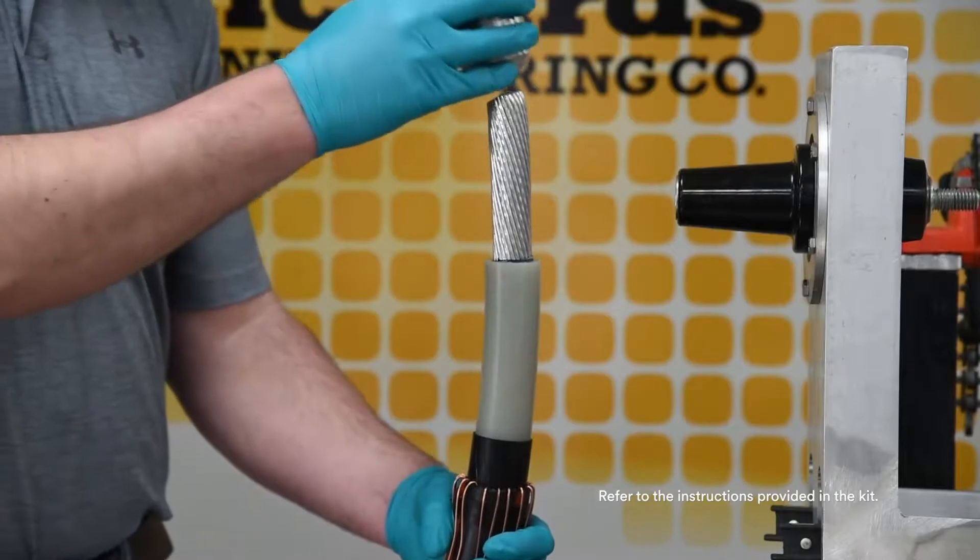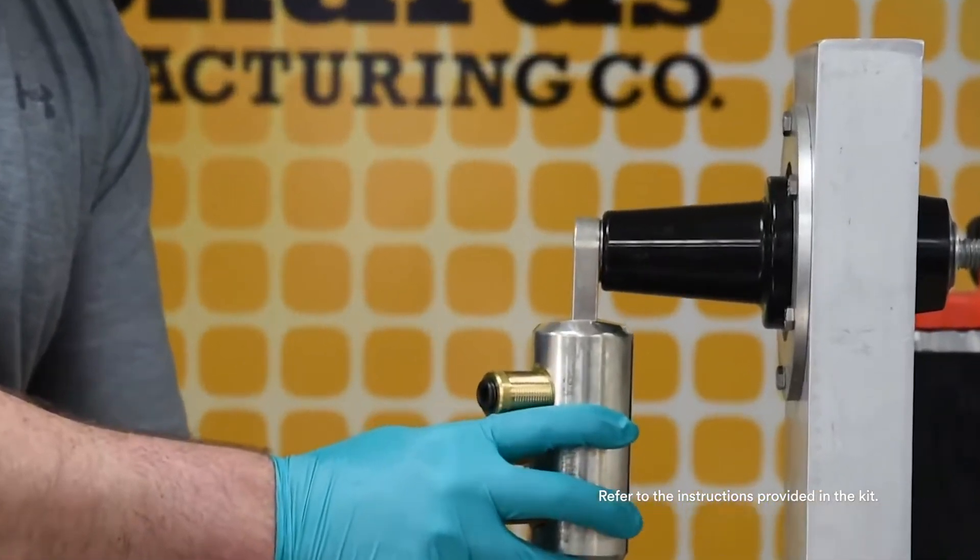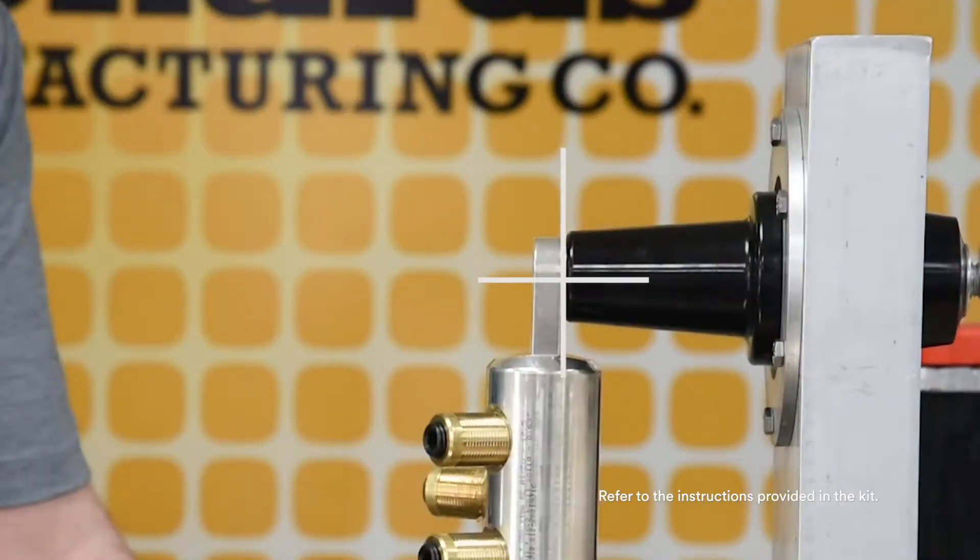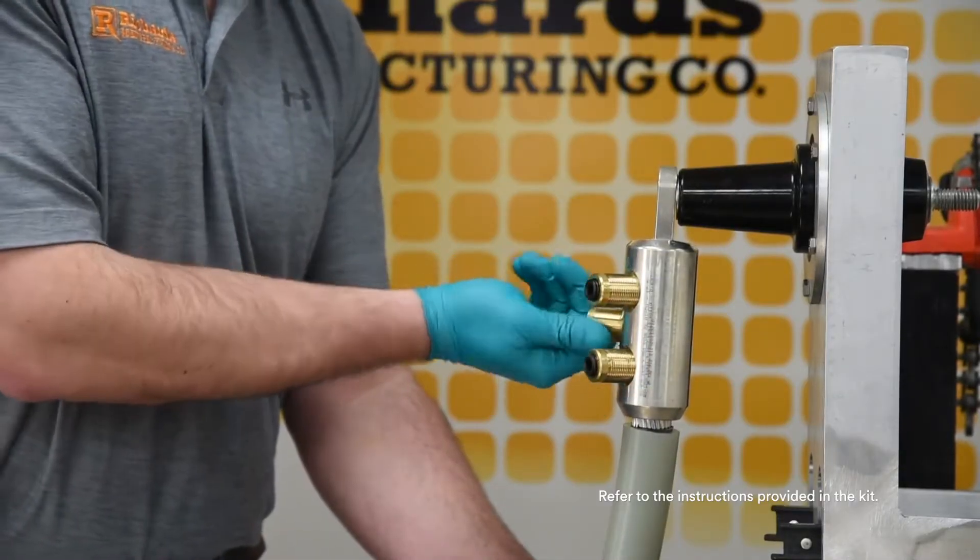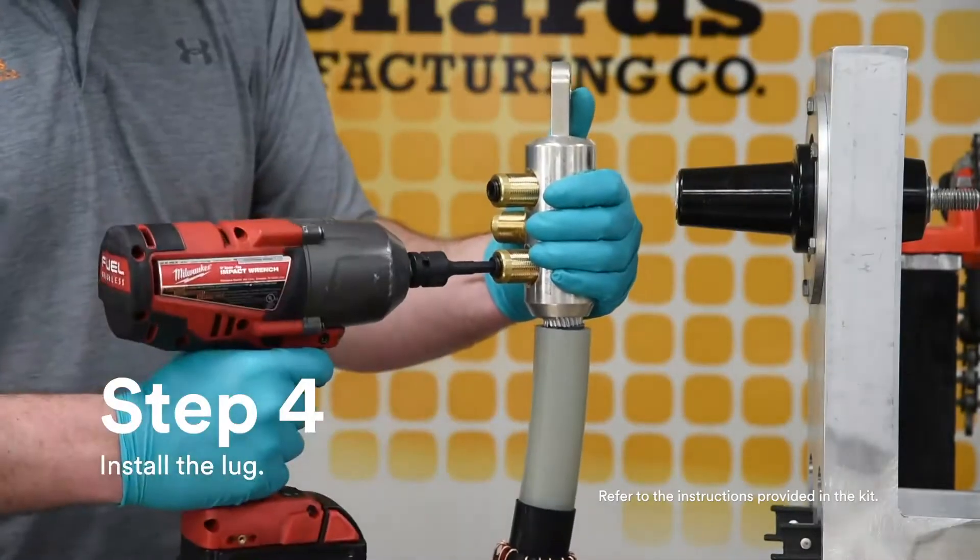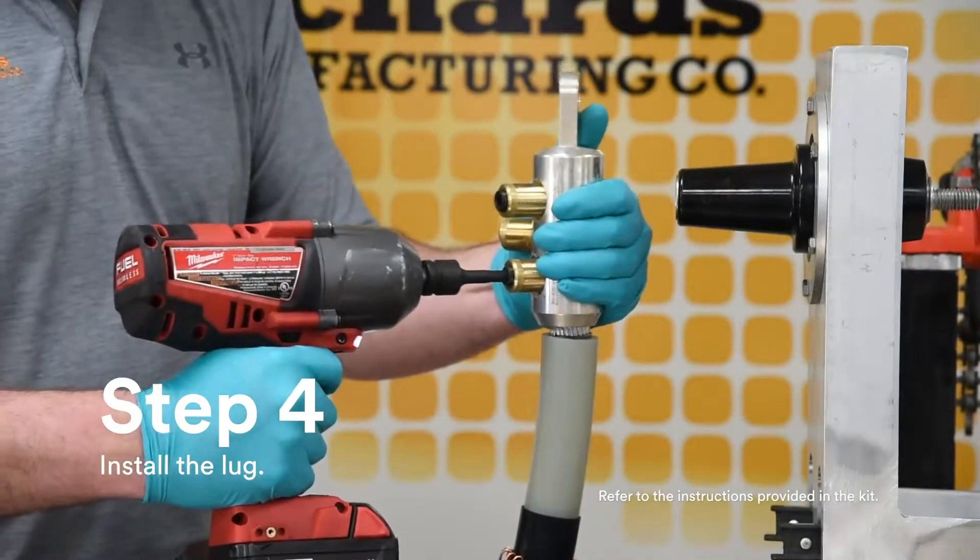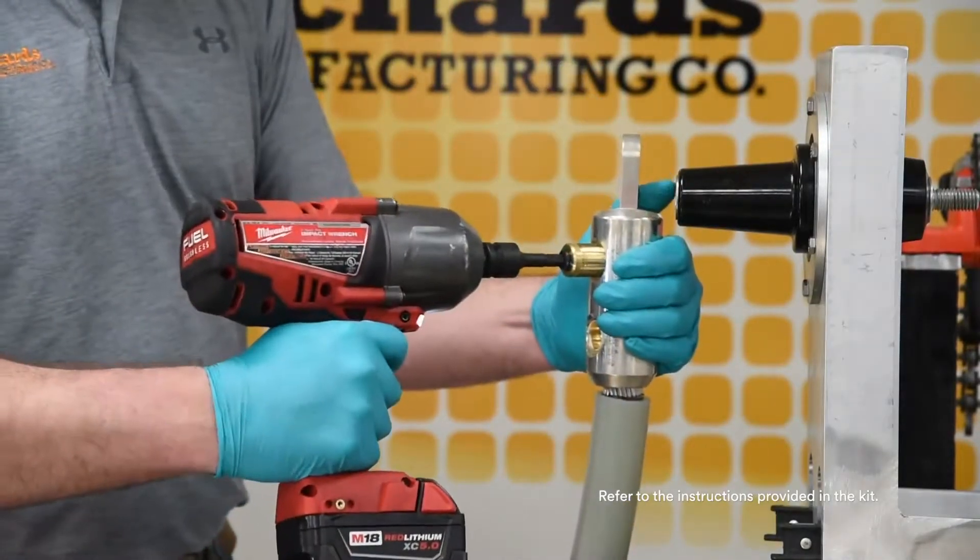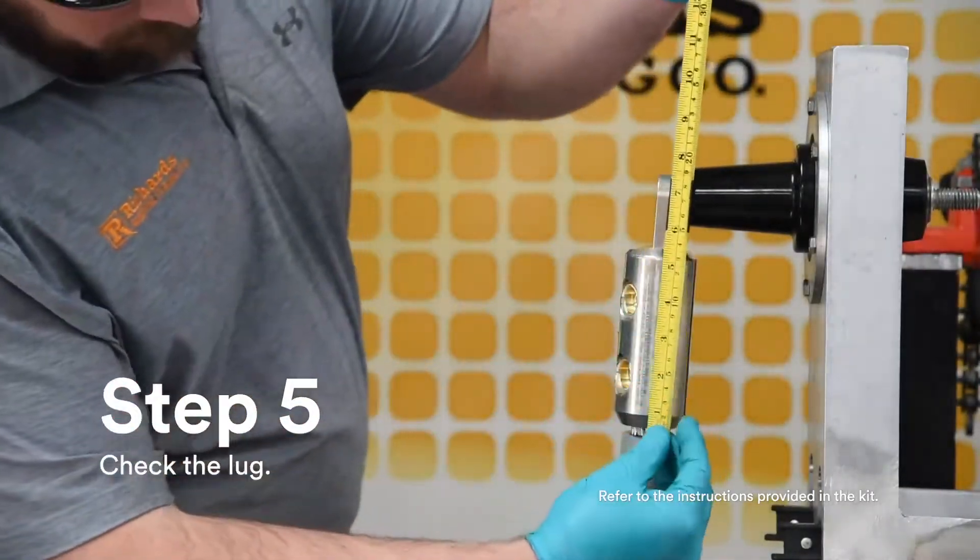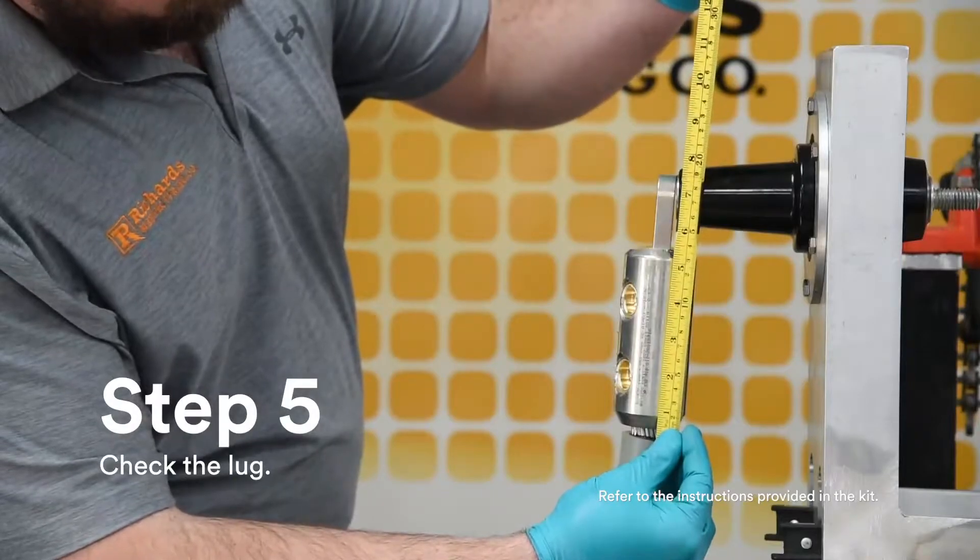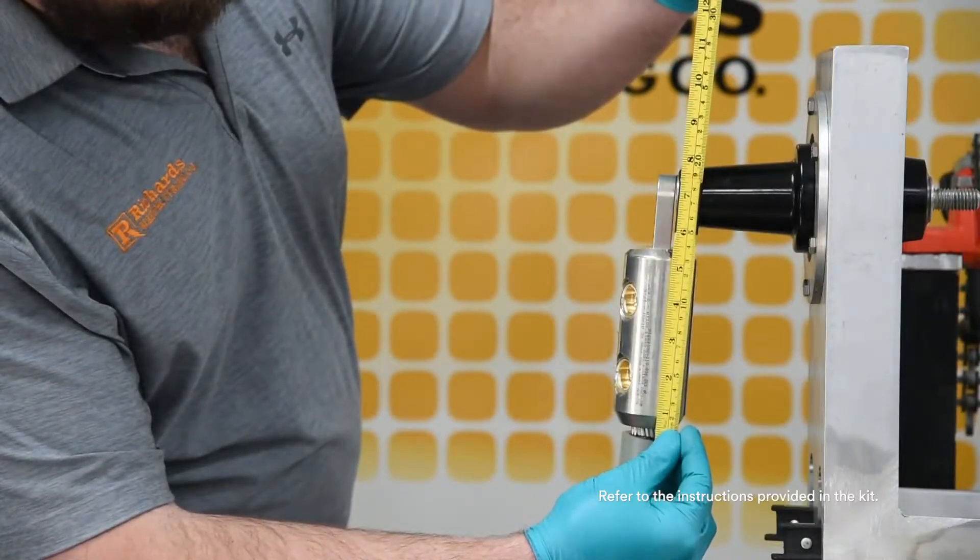Before installing the lug, make sure the spade of the lug is parallel to and aligned with the mating component. The conductor must be fully seated inside the barrel. Install either a compression or shear bolt lug according to provided instructions. Confirm distance from top surface of lug to insulation cutback does not exceed seven and one quarter inches.